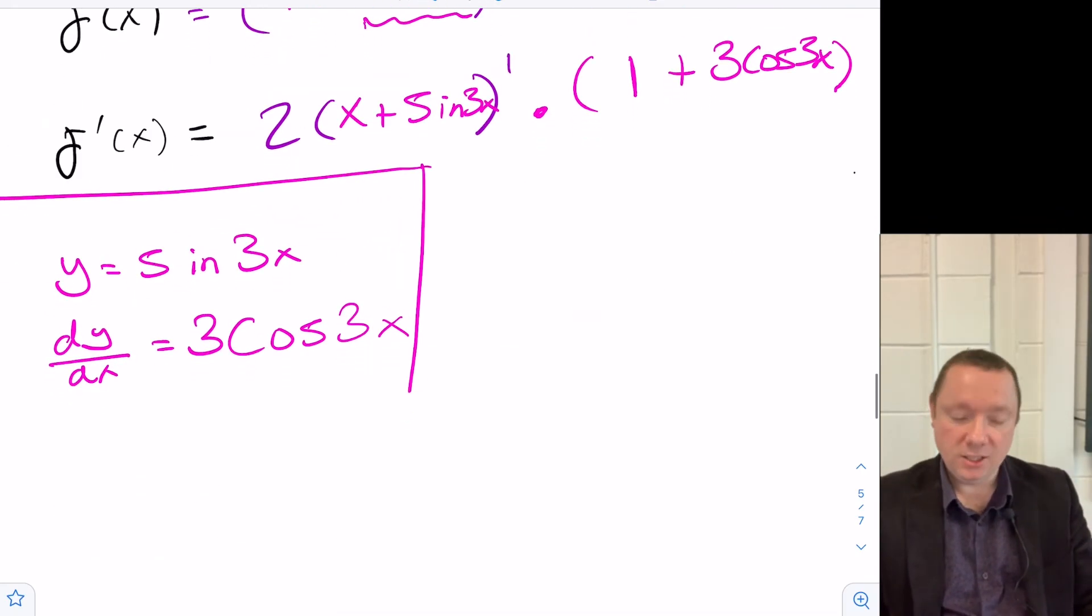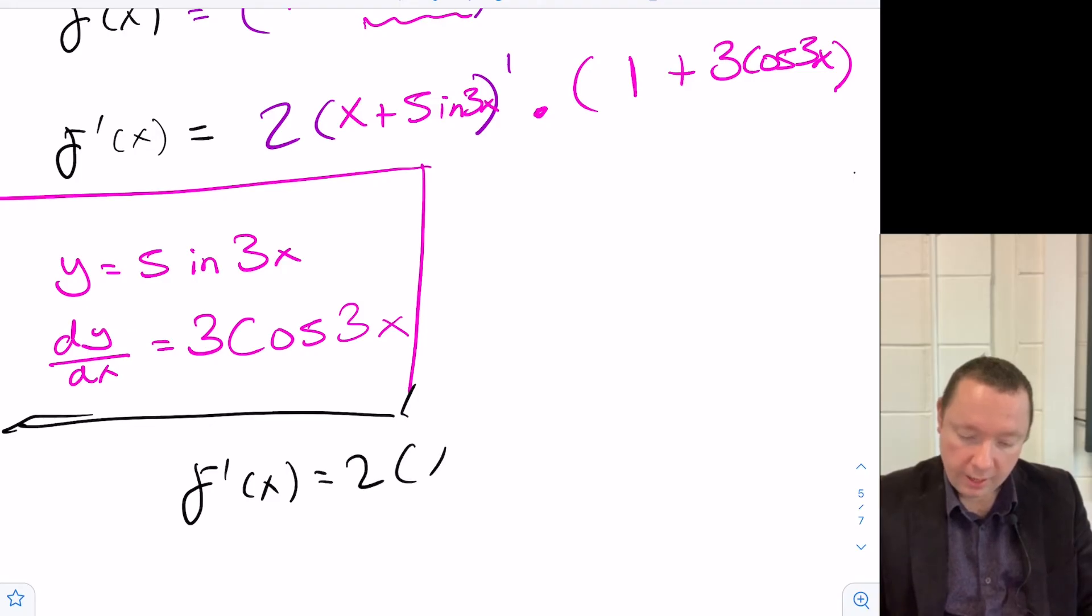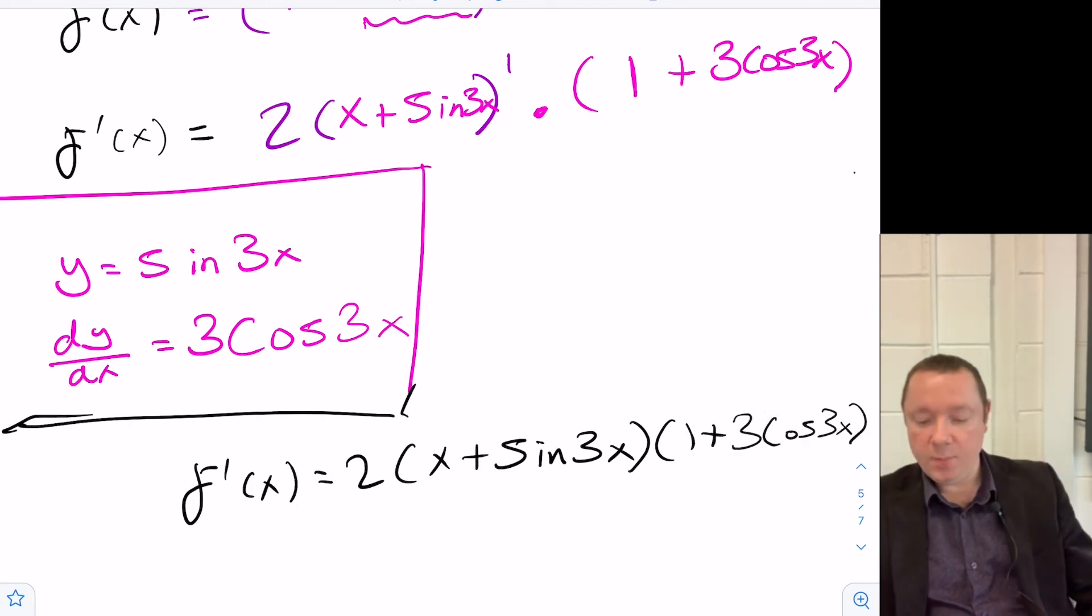So now just tidying this up a little bit, our f'(x) is simply 2(x plus sine 3x)(1 plus 3 cos 3x). And you could expand the brackets here, but there's no real need to. I think that's as tidy as it's going to be.